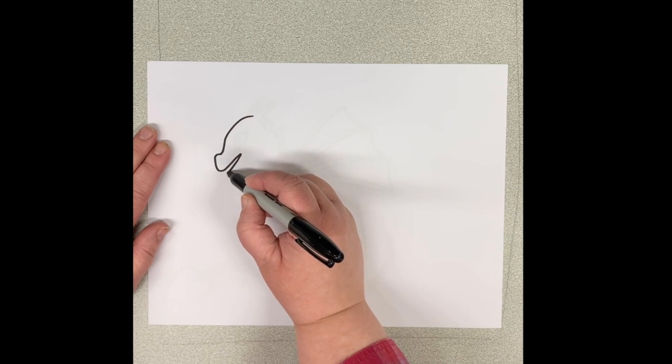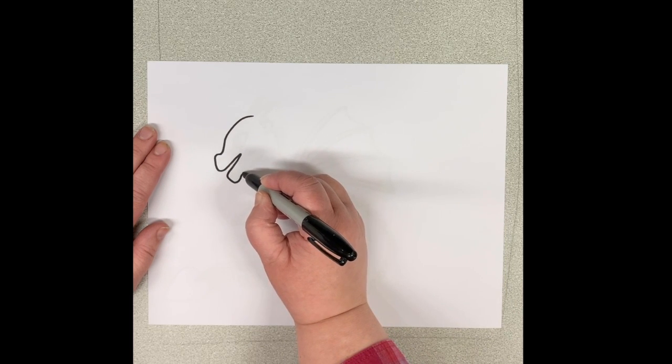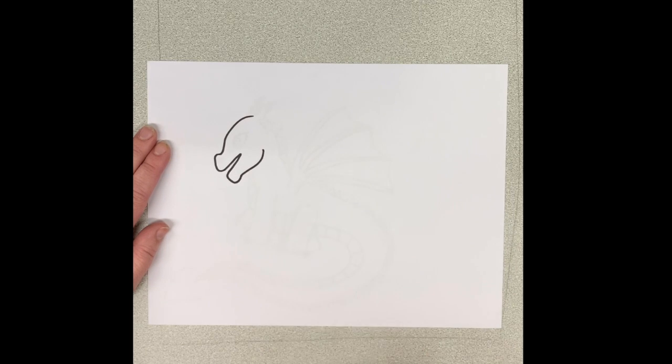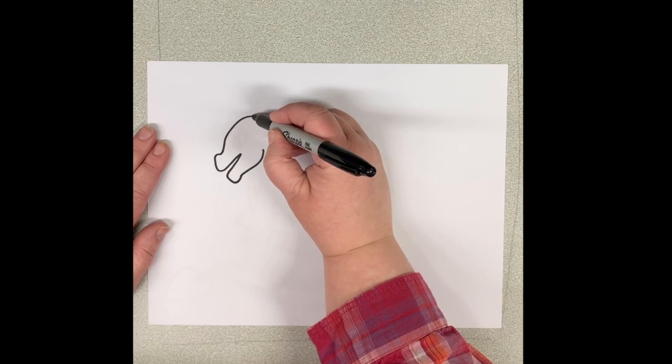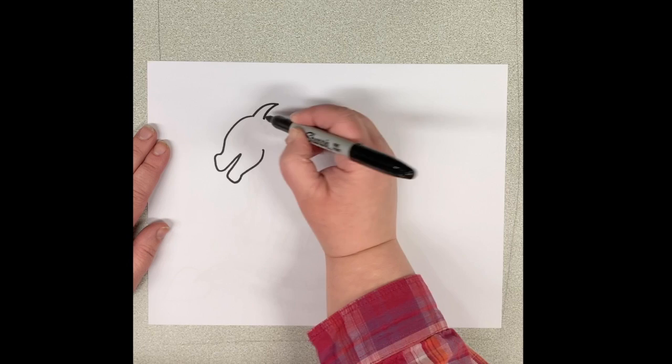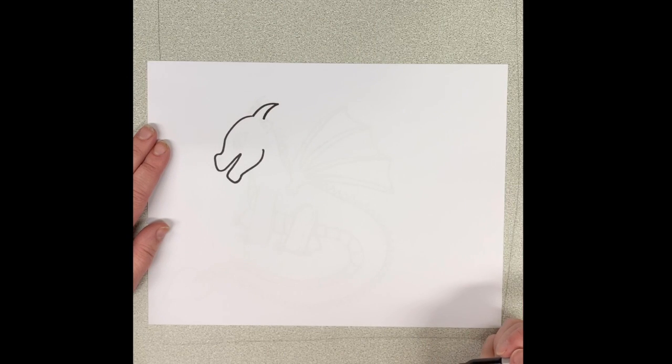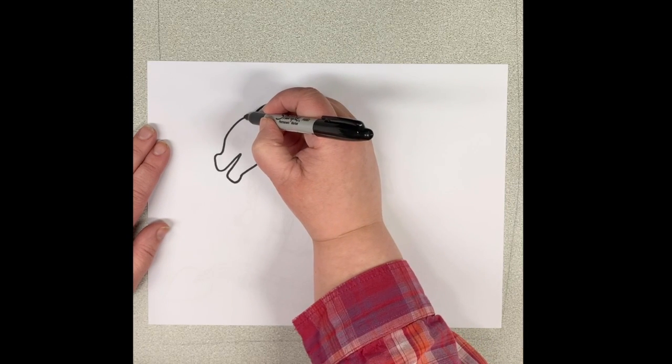Then we're going to draw back down to make the bottom part of his mouth and curl it back up for the jaw. Next we're going to add the horns for the top of his head. So we'll draw one in first, remembering to make a little pointy part at the end, and then we draw the other one right beside it.